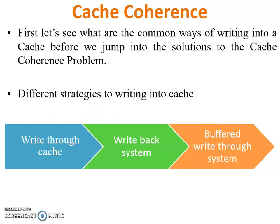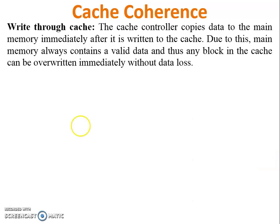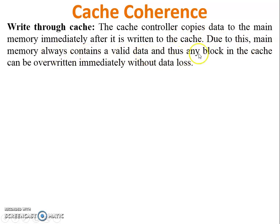The first strategy is write-through cache. As the name suggests, any change is first made in cache, and then immediately in main memory. The cache controller copies data to the main memory immediately after it is written into the cache. Because of this, main memory always contains valid data, and any block in the cache can be overwritten without data loss.